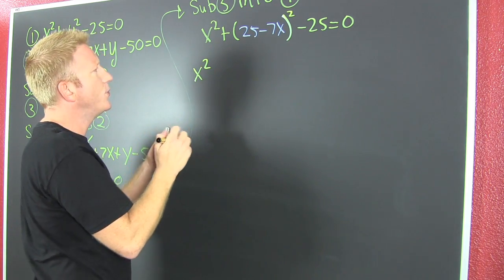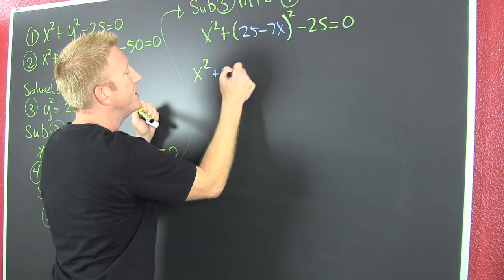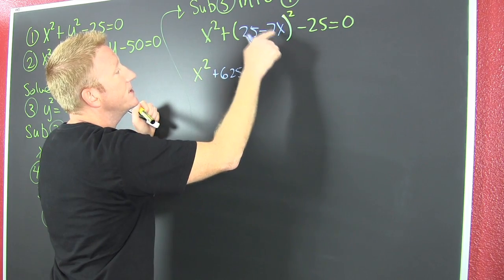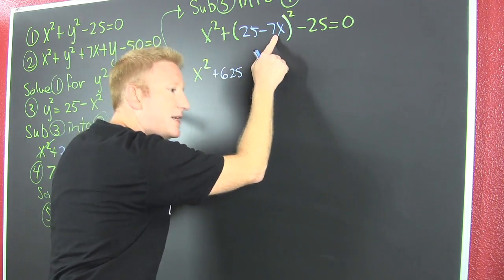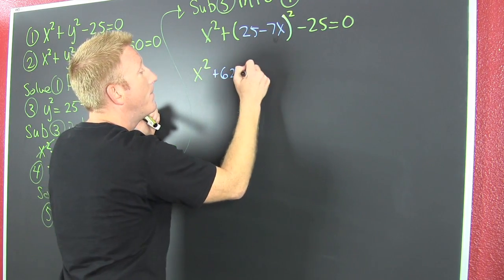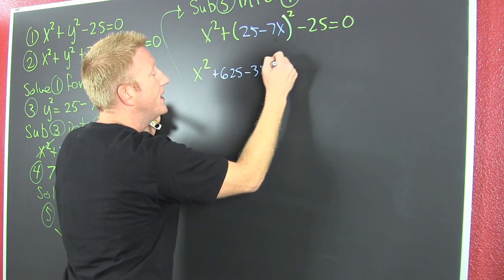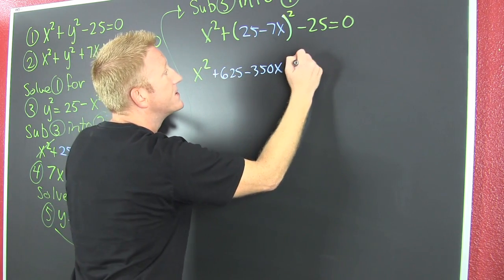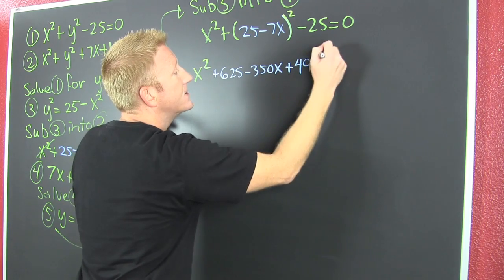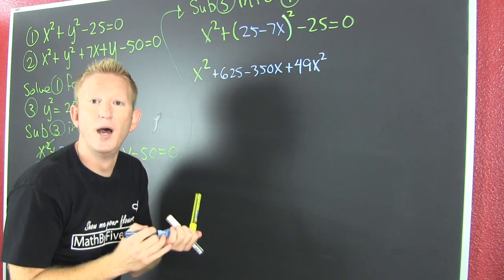Now that I got this, I'm gonna multiply that out. 25 squared, that's plus 625. Then I take this one times that one and double it, I get minus 350x. And then that one squared, that's plus 49x squared using my perfect squares.